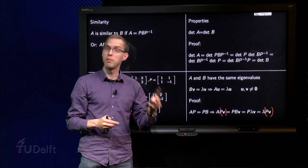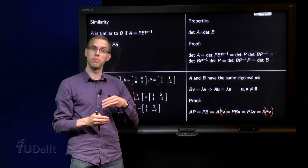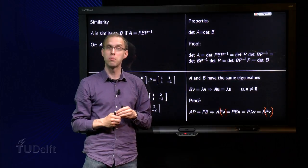So, now we know. Similar matrices have the same determinant, similar matrices have the same eigenvalues, so nice properties.